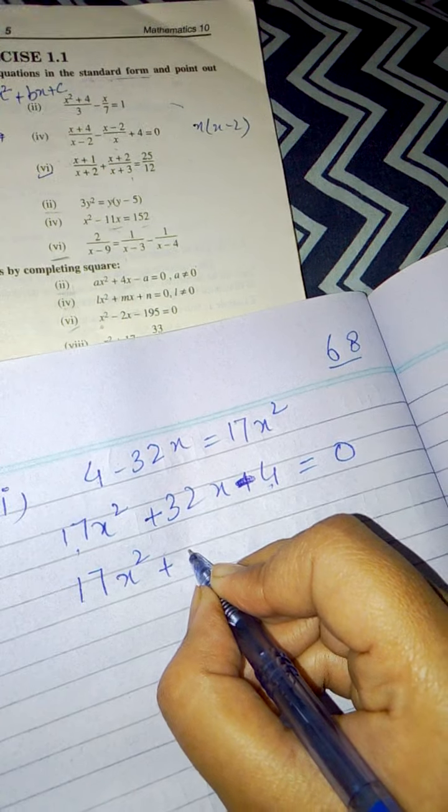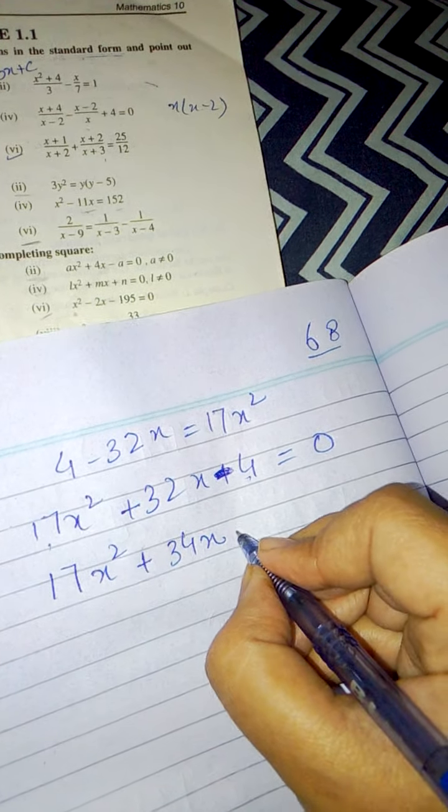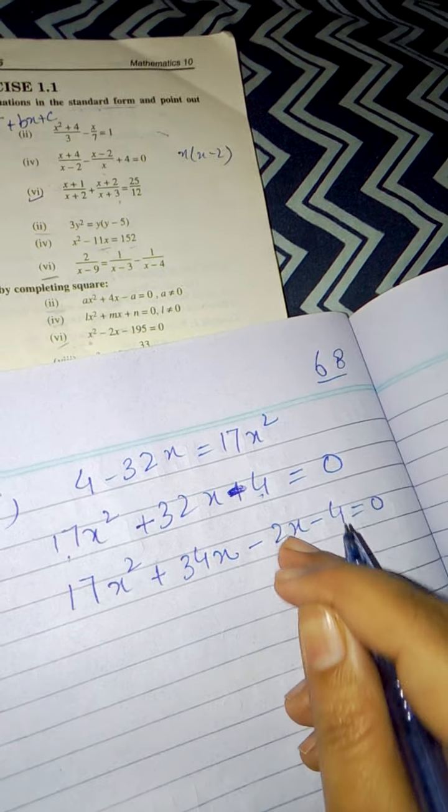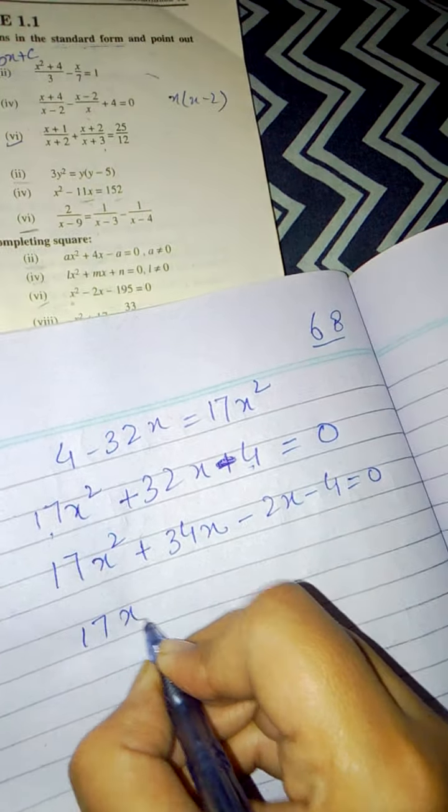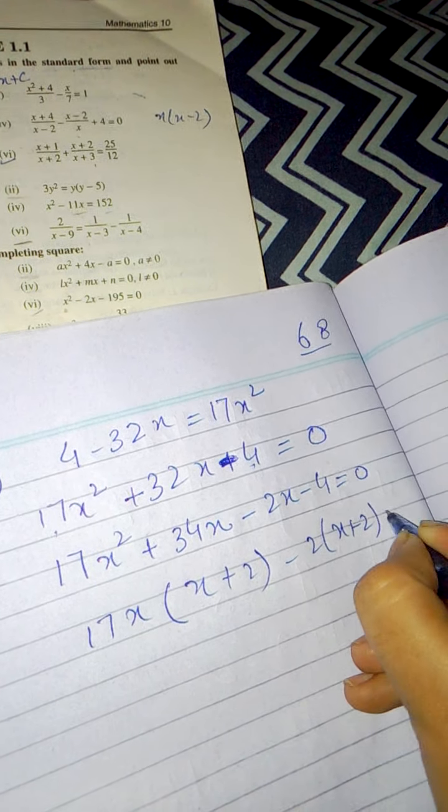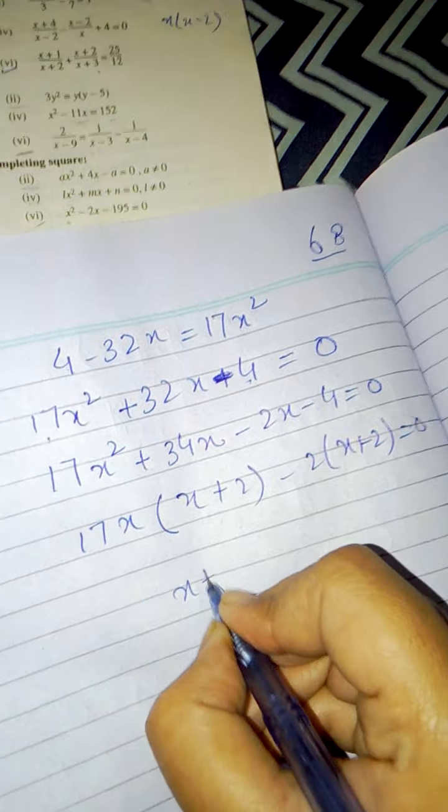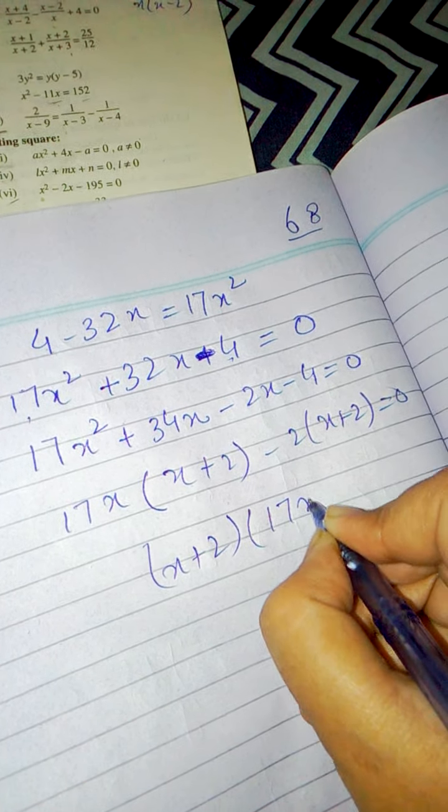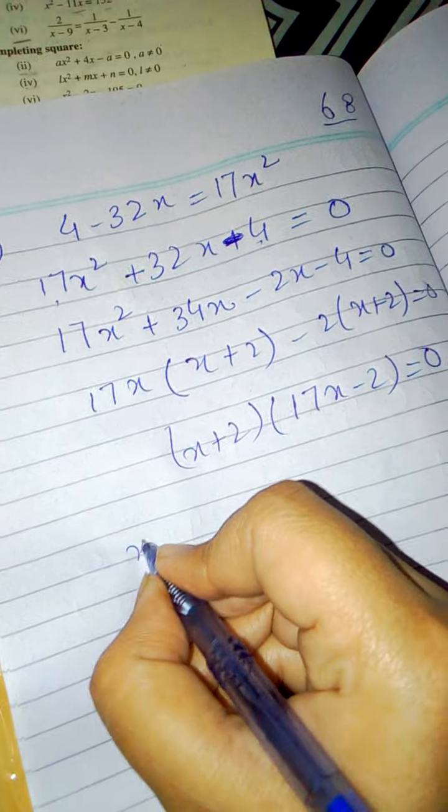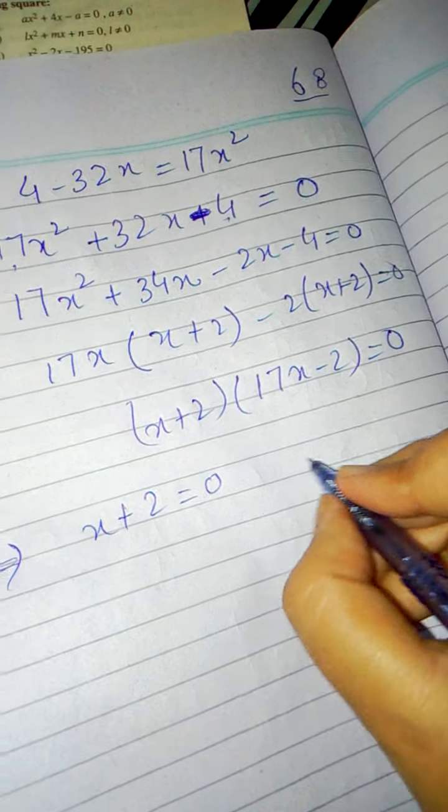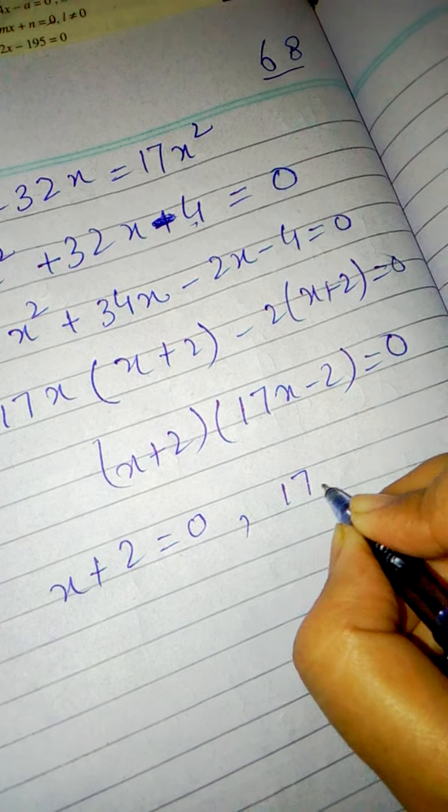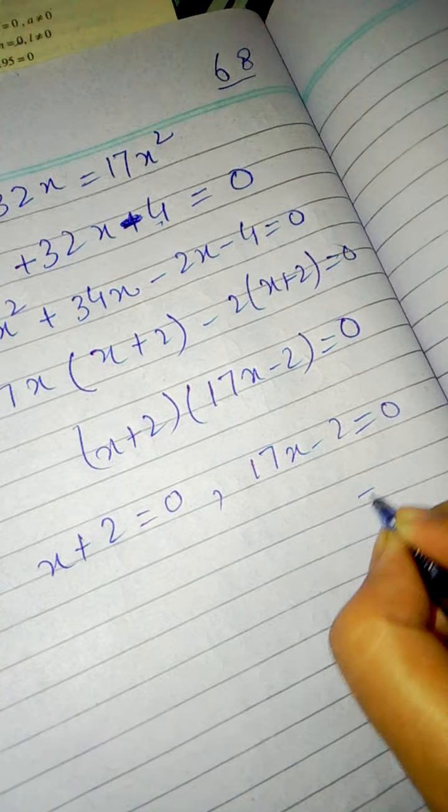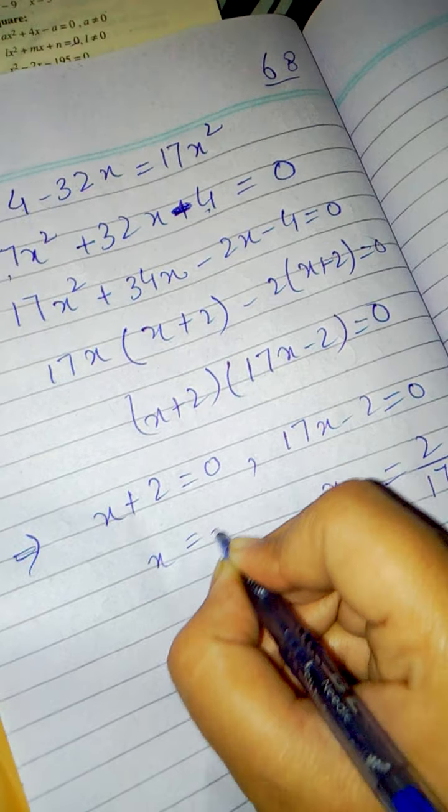What factor pair of 68 will give us 32? Very simple - we need a factor pair that gives plus. The factor pair is 34 and 2. With a quick guess I can see this will give 17x. I'll take common from these two terms, giving this result. Since there's a minus x here and a plus sign here, I can easily do this for convenience to make sure it's correct.